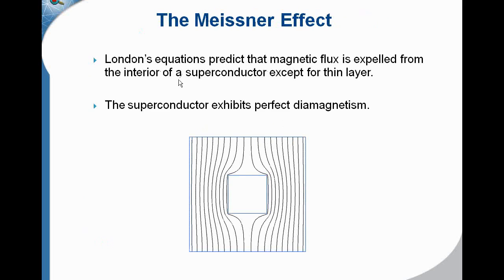So London's equations predict that magnetic flux is expelled from the interior of a superconductor, except for a very thin layer, about 50 angstroms. So we say that the superconductor exhibits perfect diamagnetism, as illustrated here.